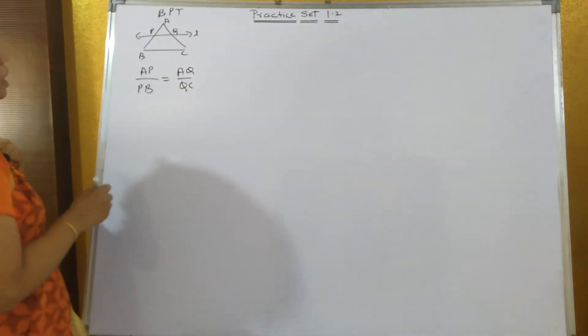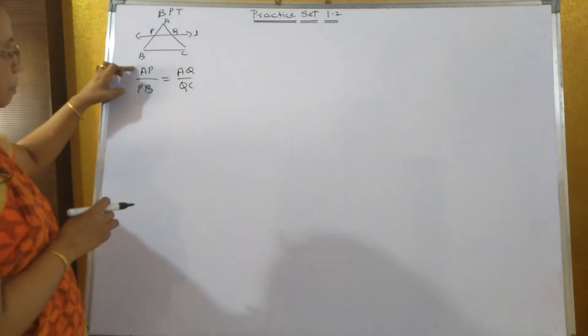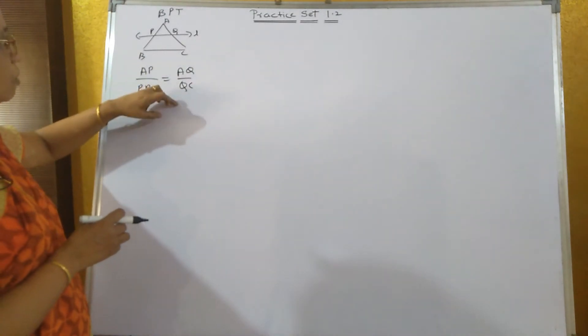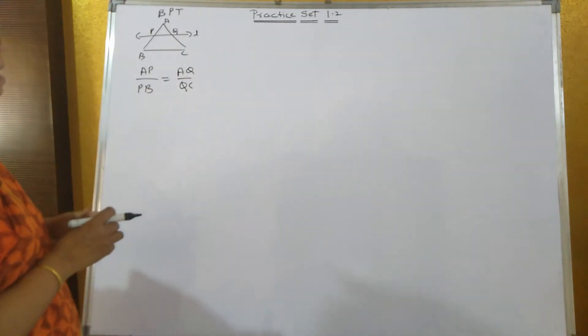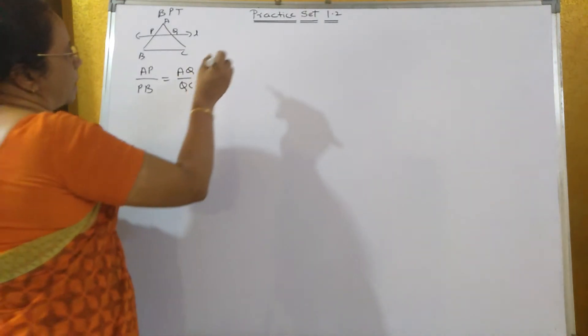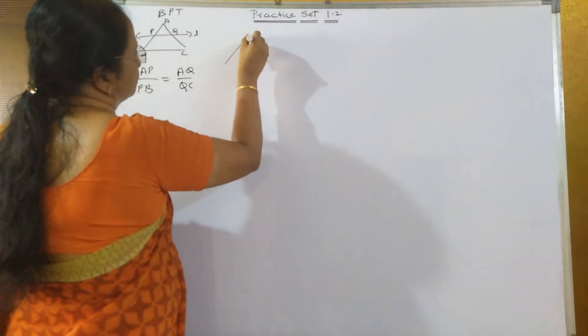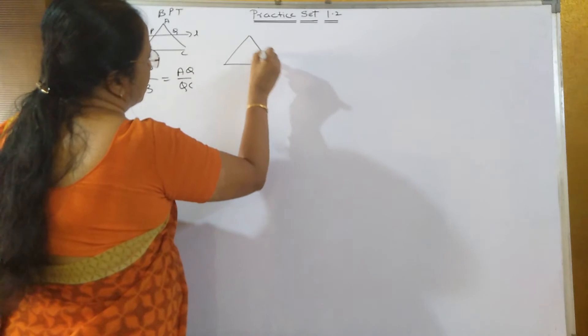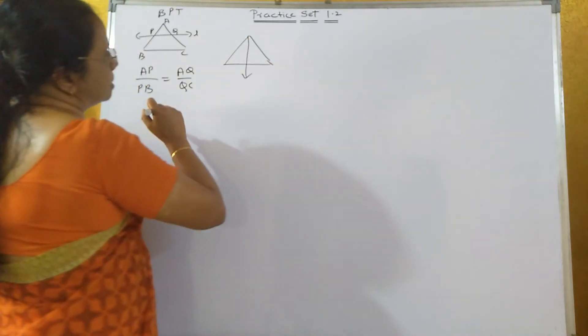And the converse of BPT is: if AP upon PB is equal to AQ upon QC, then line L is parallel to side BC. Now, angle bisector property: if a ray bisects the angle P...